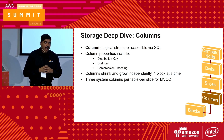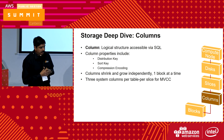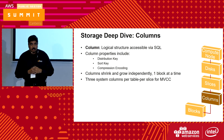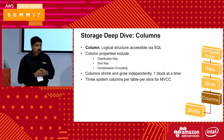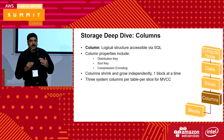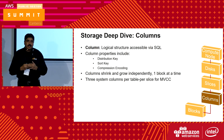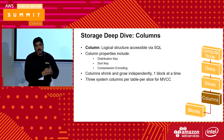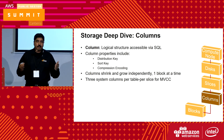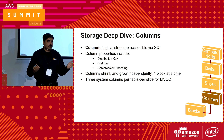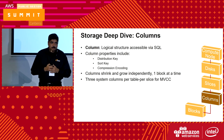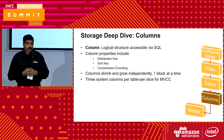Columns are logical structures accessible through SQL. The properties of a column include the distribution keys, sort keys, and compression algorithm being used. Columns shrink and grow independently — one column may have run-length encoding while another has different encoding, and within the data itself, one column may show run-length encoding for 100 rows while the next 100 rows may not. There are three system columns per table per slice for MVCC.